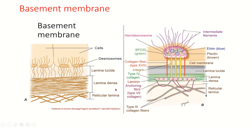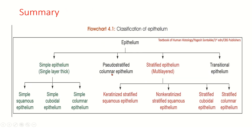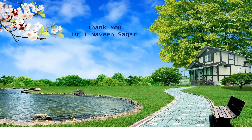Overall summary of epithelium: simple epithelium includes simple squamous, simple cuboidal, and simple columnar; pseudostratified columnar epithelium; stratified epithelium includes stratified squamous — keratinized and non-keratinized — stratified cuboidal, stratified columnar, and transitional epithelium. Thank you.